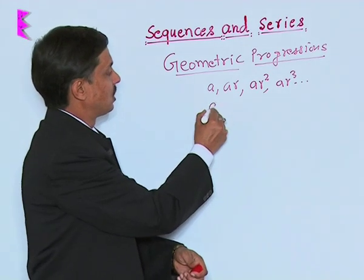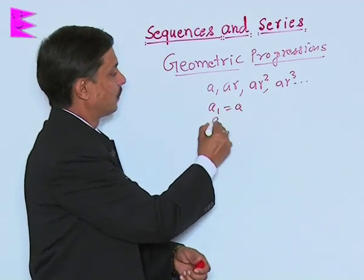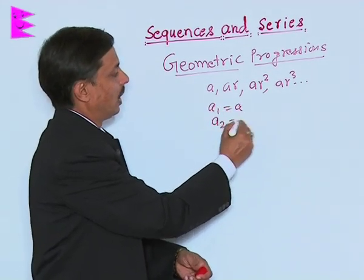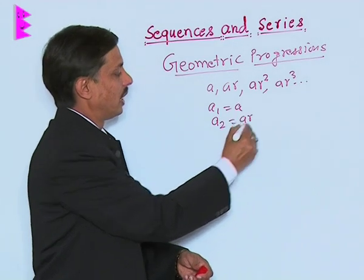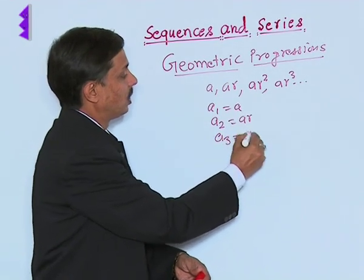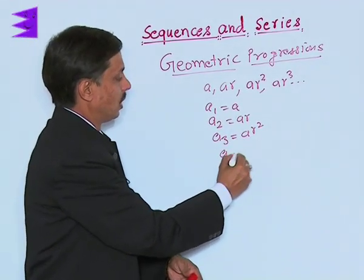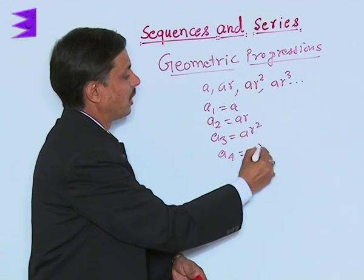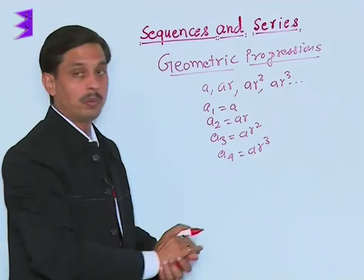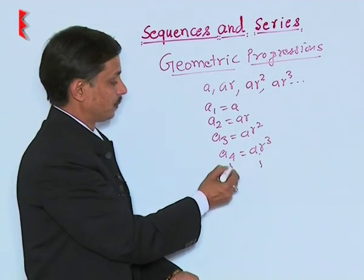If we say A1 is A, A2 is AR, A3 is AR squared, A4 is AR cubed, and so on.